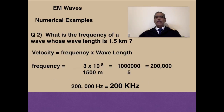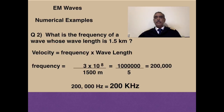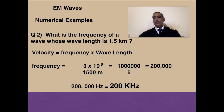Second example: what is the frequency of a wave whose wavelength is 1.5 kilometers? As forewarned, we must be careful with units. First, 1.5 kilometers equals 1500 meters. Frequency equals 3 × 10^8 divided by 1500 meters, which works out to 200 kilohertz. Be careful of the units and you can get through any such problem fairly easily.